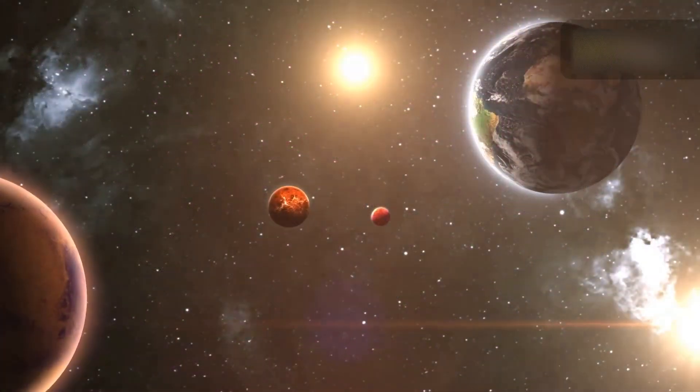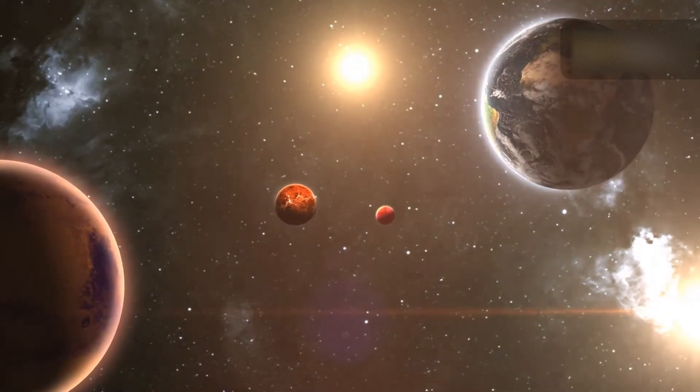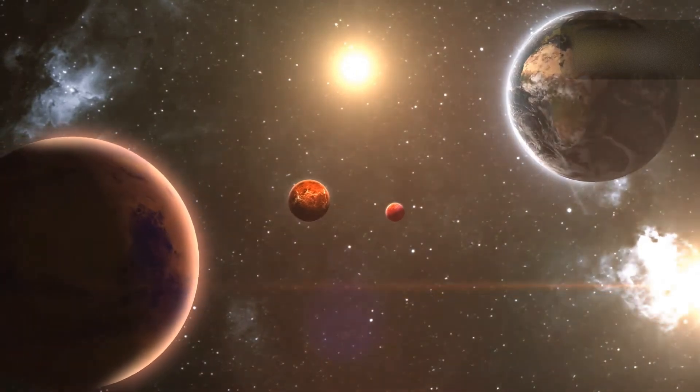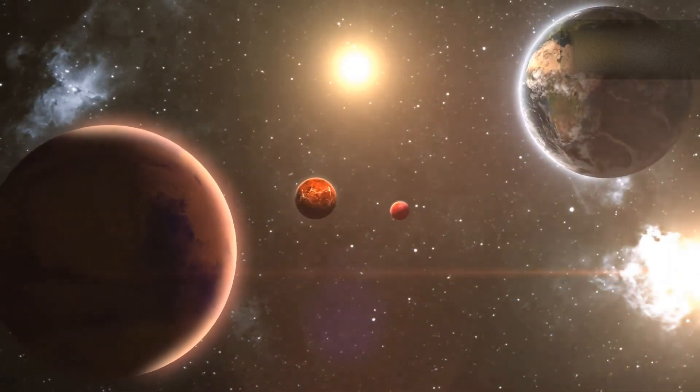When using binoculars or telescopes to observe the planets, especially close to sunrise, be extremely careful to avoid looking directly at the sun, as it can cause serious eye damage.